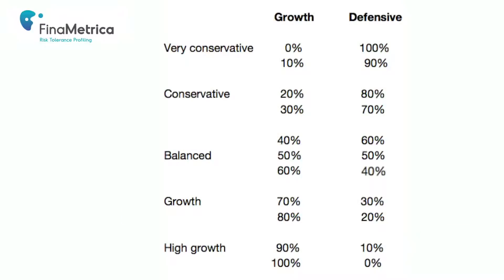To allow everyone to get what they need, the seven risk groups require 11 portfolios of different ratios between growth and defensive assets. The portfolios go from very conservative with absolutely no growth assets at all, up to high growth with 100% growth assets. There's a portfolio for each 10% increment — 10/90, 20/80, 70/30, 60/40, and so on. Each of these 11 portfolios has its own risk and return guide, meaning an advisor always has the resource available for every client, no matter how risk-seeking or conservative that client may be.